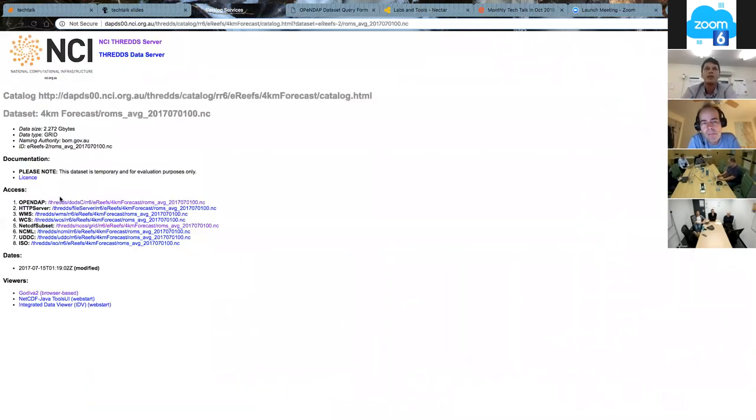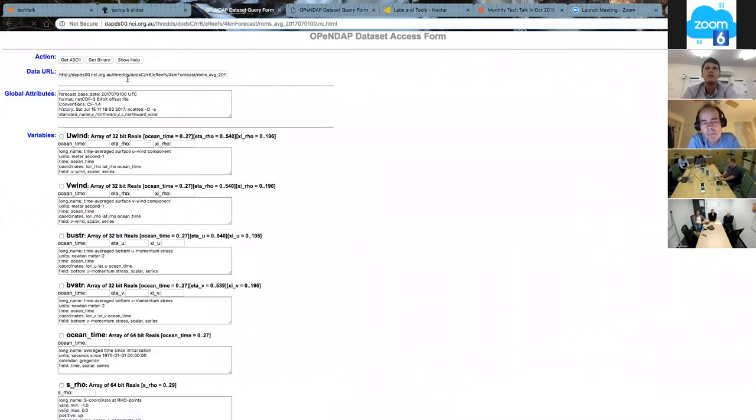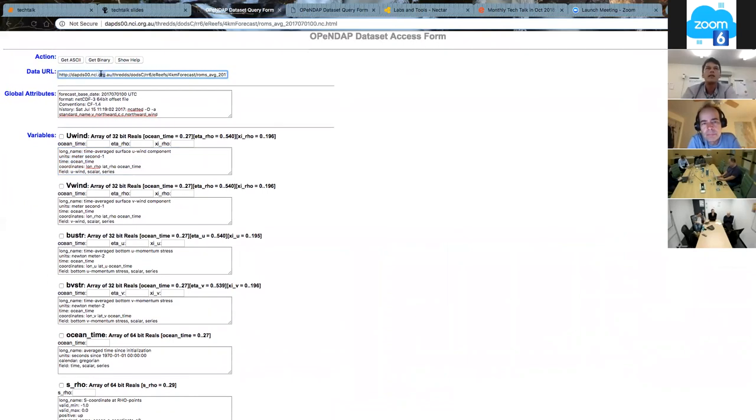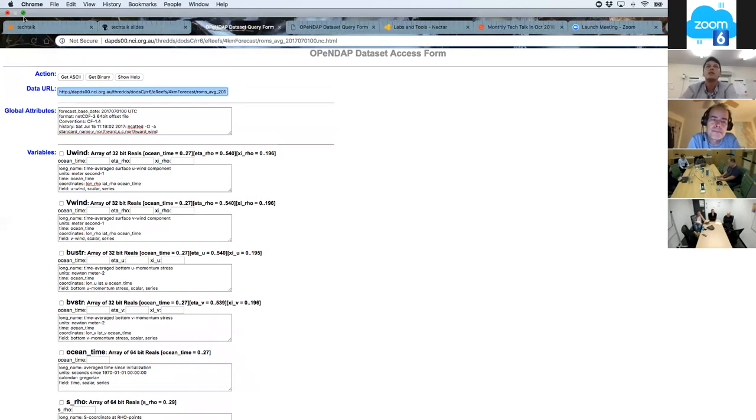And the OpenDAP service, you can see all the global attributes, the variables, their local attributes. And utilizing this link, you can plug it into Python, as an example, and then extract the data just on the fly, there's no need to download it all. I'll go through an example in a second.